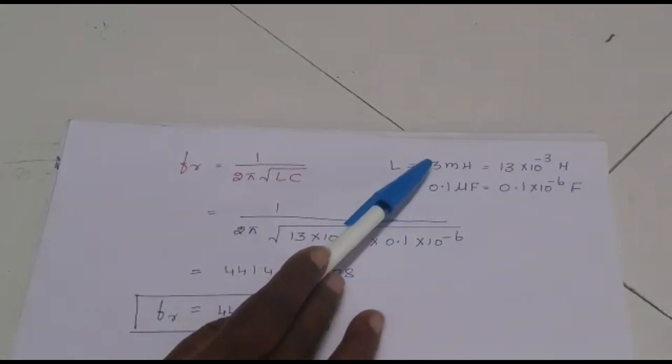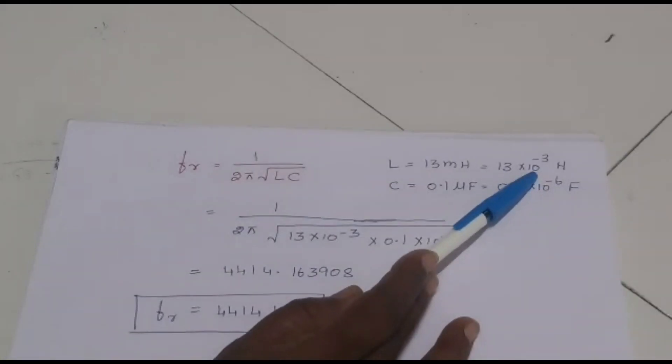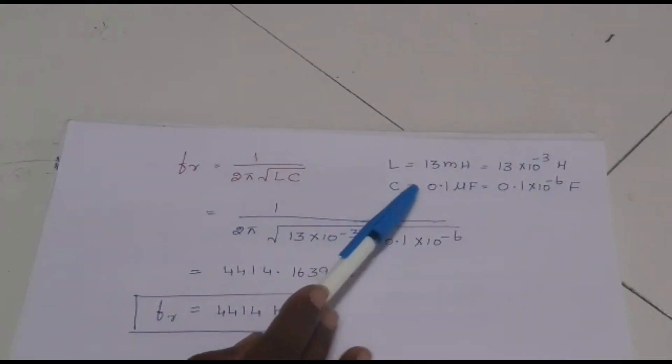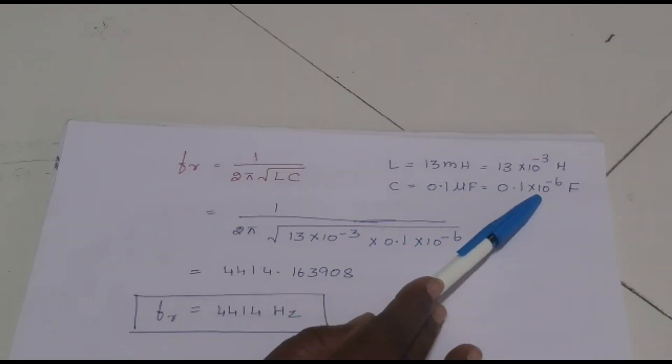Actually, L value is equal to 13 millihenry. First, we should convert this milli into 10 power minus 3. And C value is equal to 0.1 microfarad. Micro means 10 power minus 6.